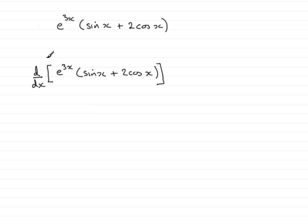What I'm going to opt for is to let y equal this expression. So I'll just take that out. So we'll just say let y equal e to the 3x times sine x plus 2 cos x.